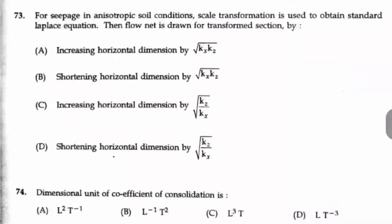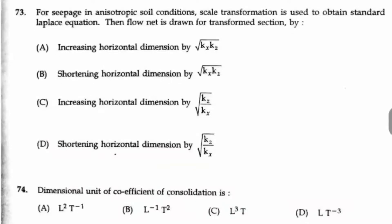Question number 73: For seepage in anisotropic soil conditions, scale transformation is used to obtain standard Laplace equation. Then the flow net is drawn for transform section by what? Here option D is the right answer: shortening the horizontal dimension by root of K_z by K_x.